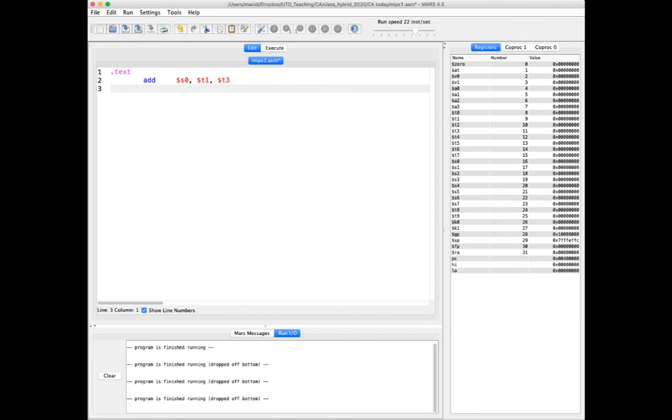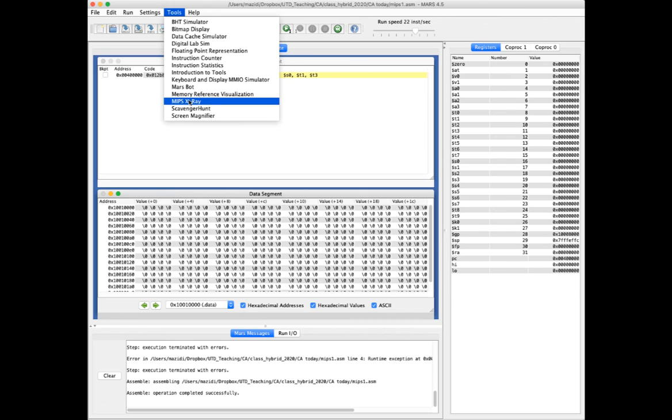Now I want to show you a really cool feature in MARS. Here I have an ADD instruction, an R-type instruction. I'm going to go to Assemble, Tools, MIPS X-Ray, and it pops up this peak inside the CPU.